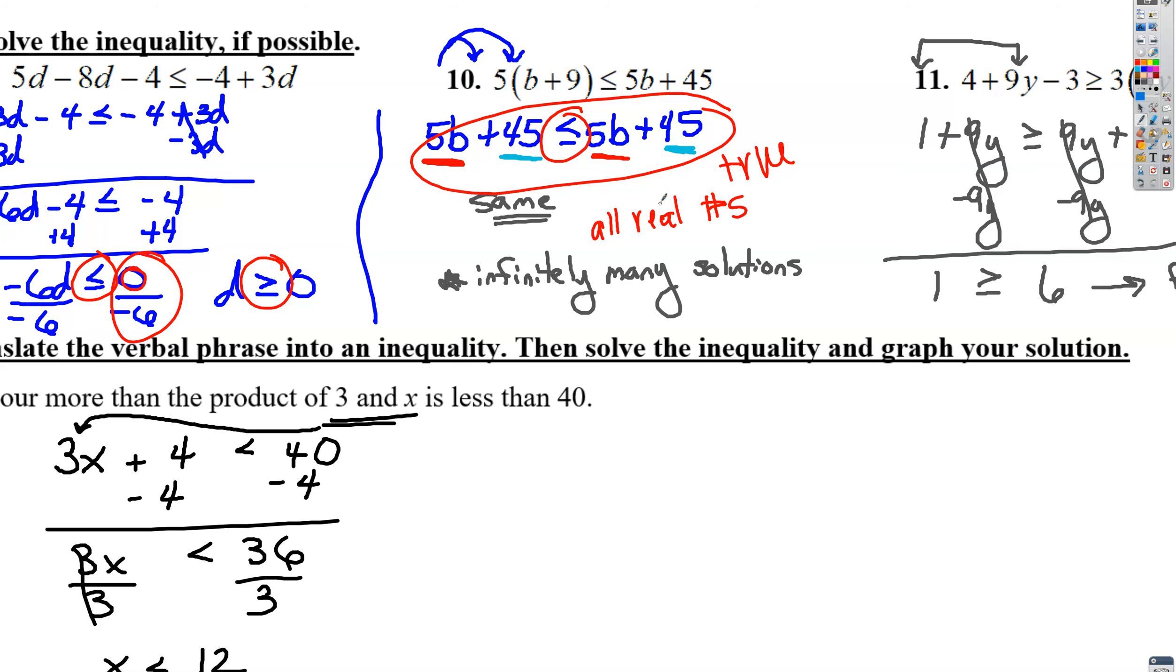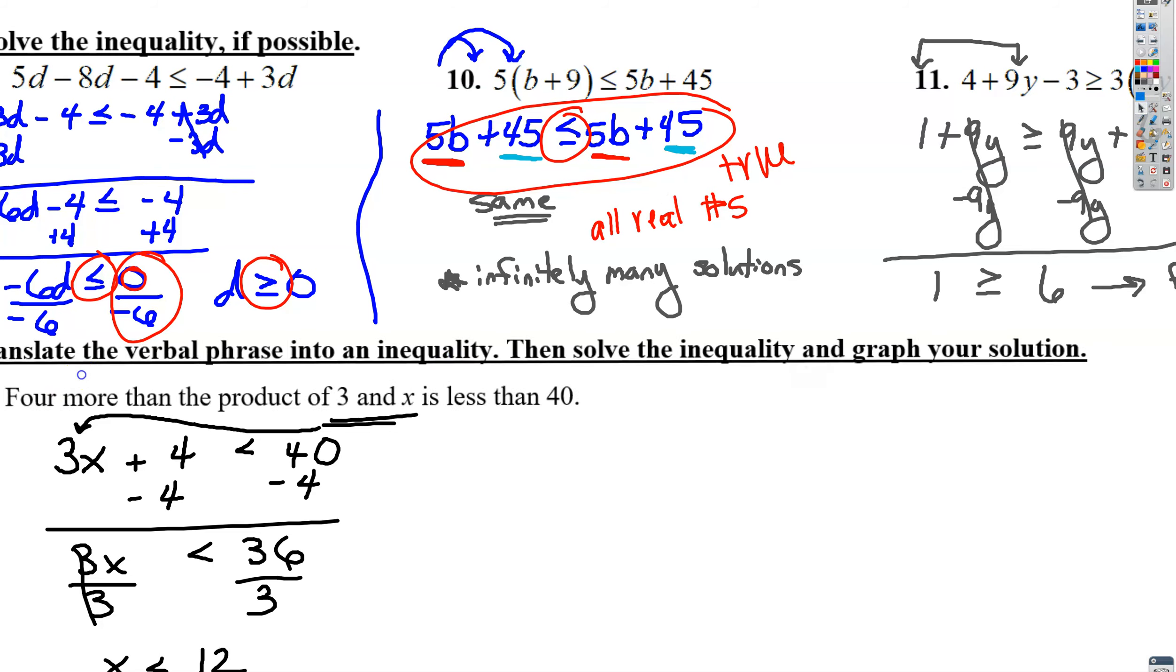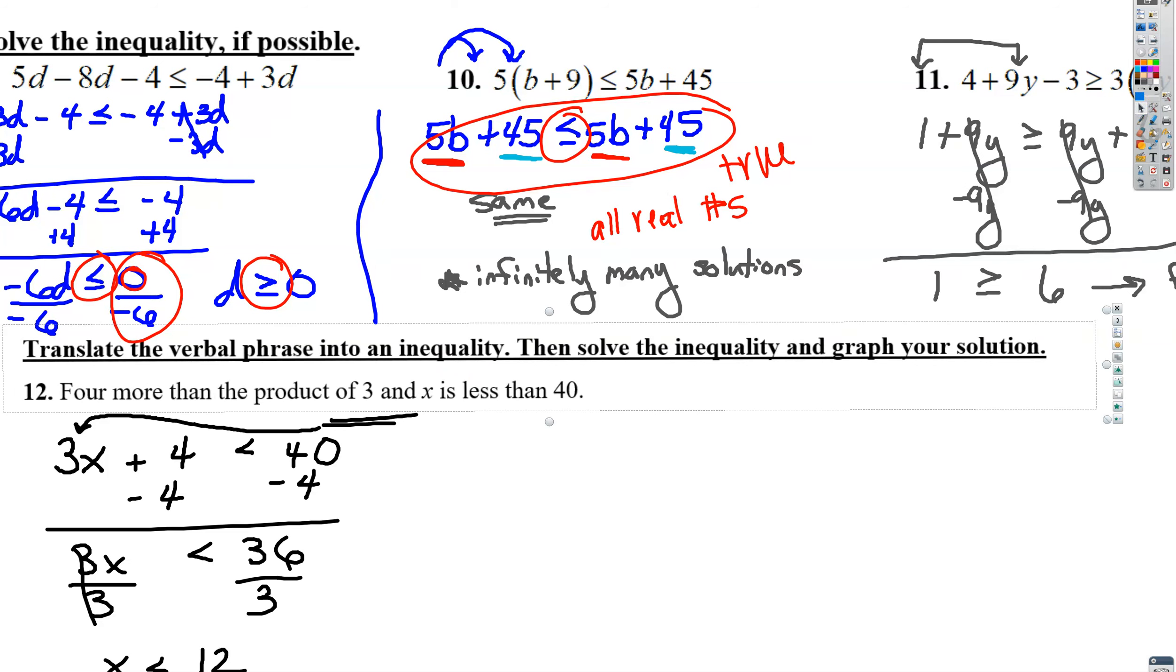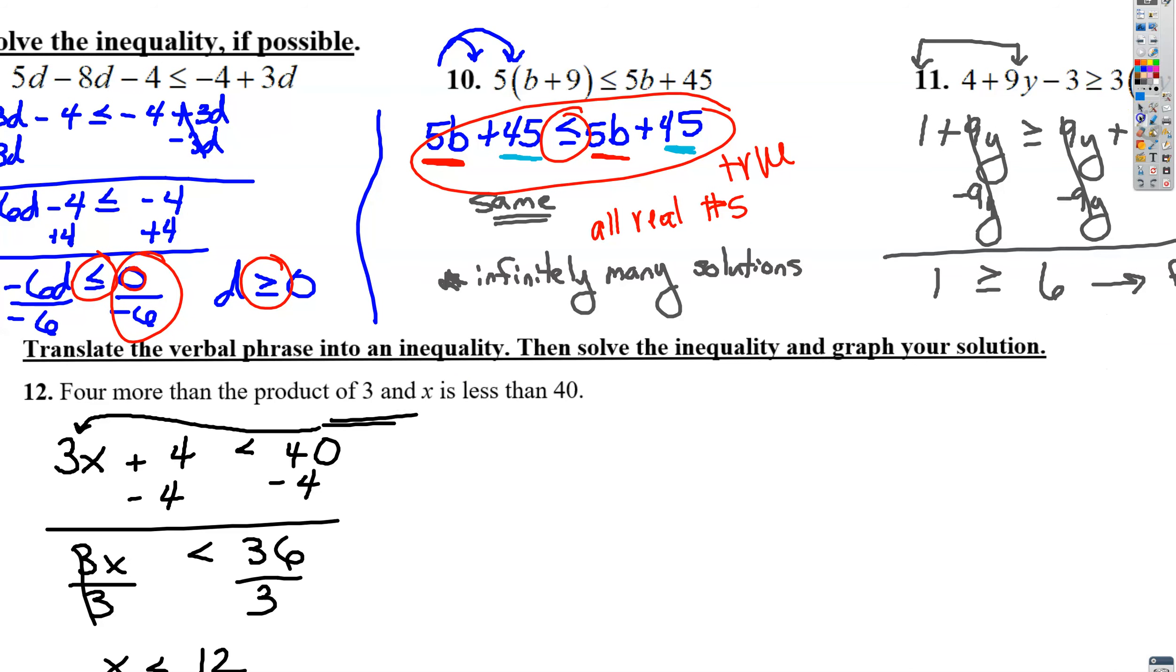All right. So this next section we are supposed to translate the verbal phrase into an inequality, then solve and graph the inequality. Four more than the product of three and x is less than 40. So first thing, four more means you add four to something. If you're increasing something by four, that means add four, so that's where this add four came from.